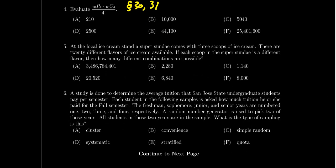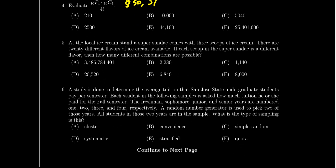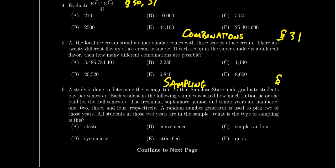Question number five is going to specifically involve combinations. As opposed to the previous question which was general counting, question five is specifically about combinations. You might want to go back to assignment 31 for extra practice. Question number six will describe some type of sampling — like how participants in a survey were sampled — and I want you to correctly identify the sampling technique: cluster sampling, stratified, quota sampling, or random sampling. Those were all defined in lesson 35.